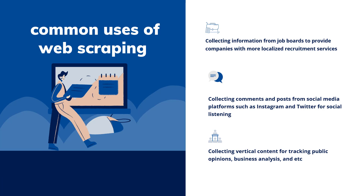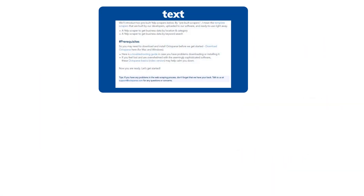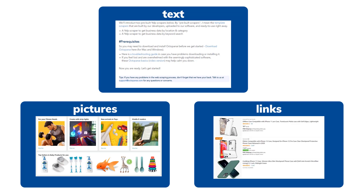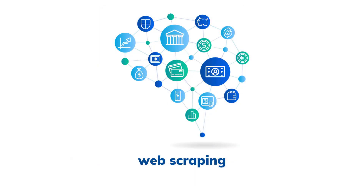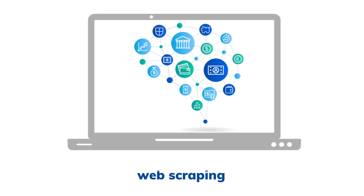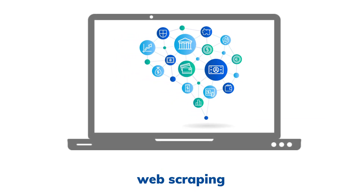Generally speaking, web scraping is the process of collecting text, pictures, or links from web pages — that is, anything you can see on the web pages. Some information may be hidden on the web pages but found in the source code and can still be scraped.